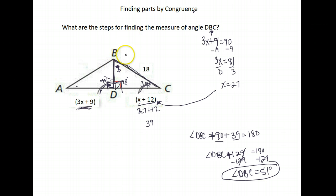Now, what were the steps? First, I set 3X plus 9 equal to 90, because I knew this was a right angle, and solved to find the value of X. Then I substituted my value of X into angle BCD to find out what its measure was, and I found its measure was 39 degrees. Finally, I used the 39 degree angle and the 90 degree angle together with the angle that I was trying to find. They were in a triangle together, so I knew they added to equal 180. I solved that equation and found the measure of the angle DBC was 51 degrees.